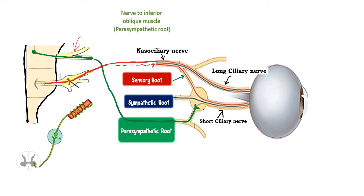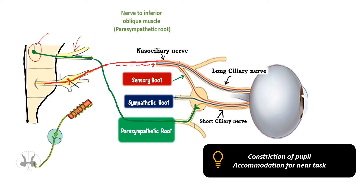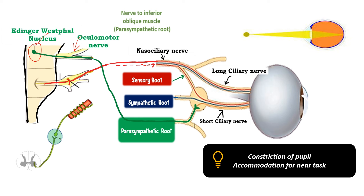The Edinger-Westphal nucleus sends parasympathetic nerve fibers traveling in the oculomotor nerve — specifically within the inferior division and then within the nerve to the inferior oblique — to reach the ciliary ganglion. Everything up to this point is the pre-ganglionic parasympathetic nerve fibers. They relay within the ciliary ganglion, travel via the short ciliary nerve, and supply the pupil as well as the ciliary muscle, causing constriction of the pupil and helping in accommodation for near tasks.